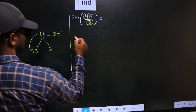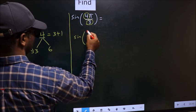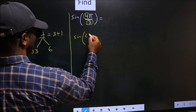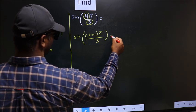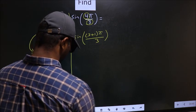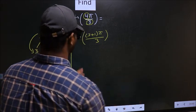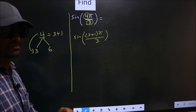So this will change to sin. In place of 4, now you write 3 plus 1, π by 3. π by 3. This is your step 1.